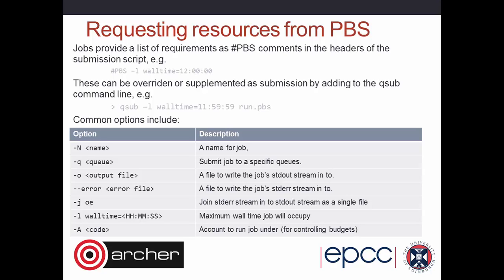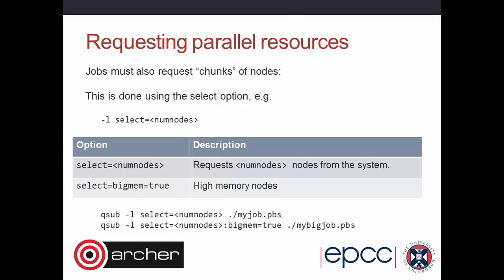Common PBS options include: '-N' to name the job, '-q' to specify the queue, '-o'/'-e' for output and error files. '-j oe' combines stdout and stderr into a single stream. Walltime is the elapsed time. '-A' specifies what account to charge the job to on Archer — except for one special queue, all jobs are charged against a budget of time and you need to specify it with the '-A' flag.